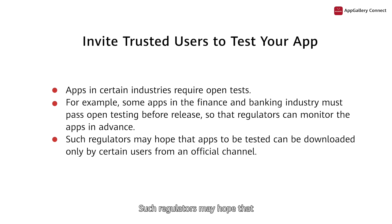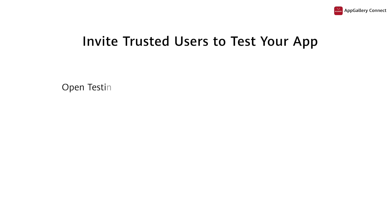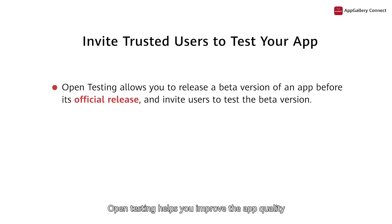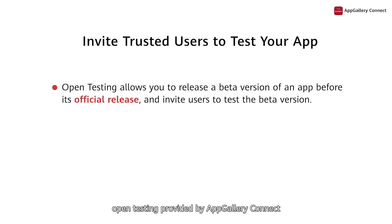Such regulators may hope that apps to be tested can be downloaded only by certain users from an official channel. Open testing helps you improve the app quality in the development phase by inviting trusted test users, which also meets requirements of regulators. In other words, open testing provided by AppGallery Connect is something you can do before official release to ensure app quality.